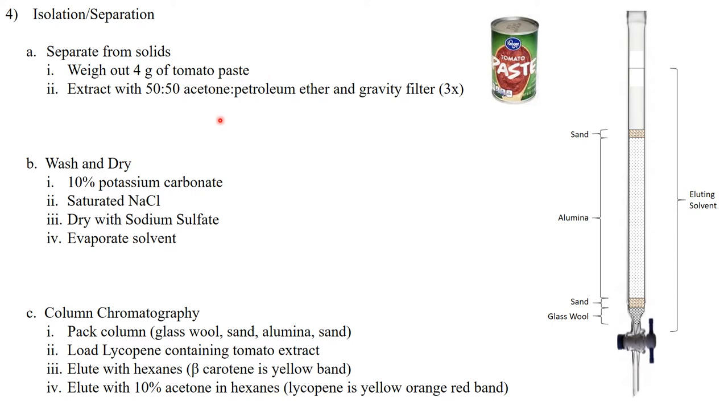And then we're going to pour on that some 50-50 acetone-petroleum ether mixture and sort of mix it all up. And then all the organic materials that are soluble in acetone-petroleum ether will solvate, leaving behind any of the solid materials that are in tomato paste.